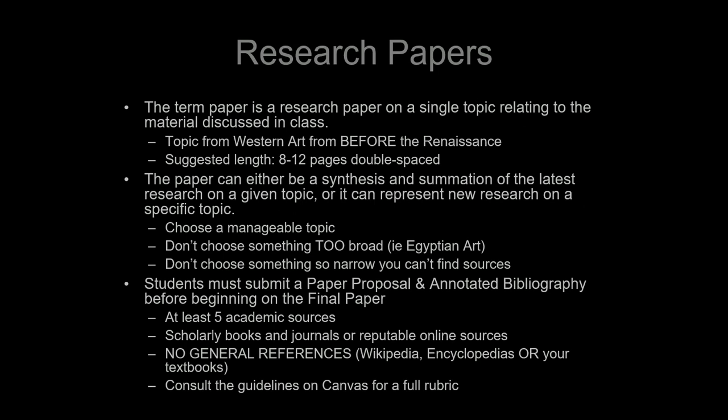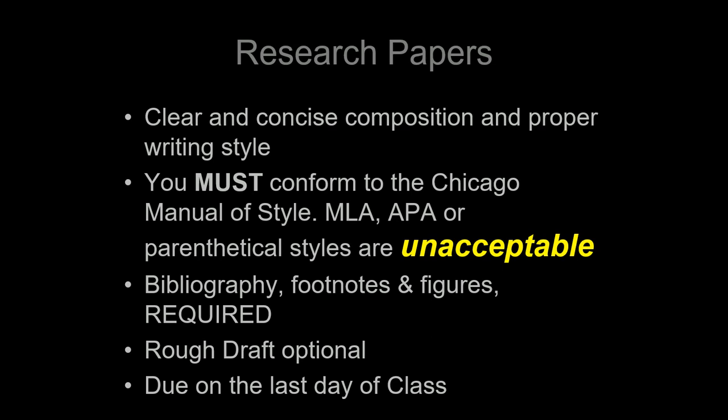There is a full set of guidelines for how I want these proposals done — they're on Canvas, so go check those out. In research papers I'm mostly looking for clear and concise composition, proper writing style, a thesis, a plan, and logical arguments backed up with citations. You also have to conform to the Chicago Manual of Style, which is standard for art history. MLA or APA parenthetical styles are unacceptable and will get you marked down significantly. You must use footnotes and bibliography — do not use works cited lists and do not use parenthetical citation.